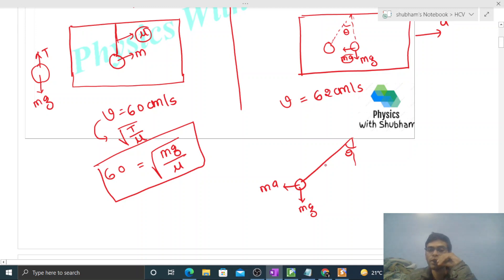This angle is theta. Downward direction its weight mg, backward direction pseudo force that is ma, and in this direction tension. So the tension value that will come is m under root of a square plus g square.